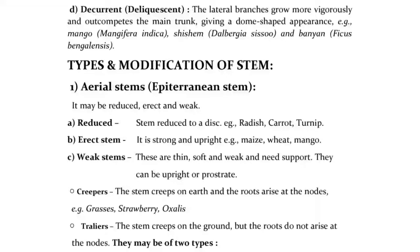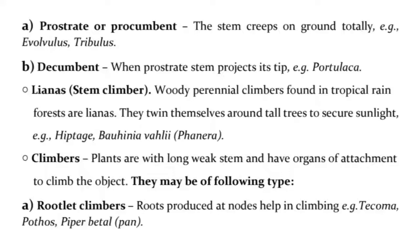Creepers — the stem creeps on earth and roots arise at the nodes, e.g., Grass, Strawberry, Oxalis, Trifolium. Trailers — the stem creeps on the ground but roots do not arise at the nodes. They may be of two types: A. Prostrate or procumbent — the stem creeps on ground totally, e.g., Evolvulus, Tribulus. B. Decumbent — when prostrate stem projects its tip, e.g., Portulaca.